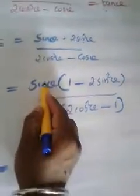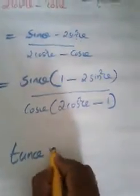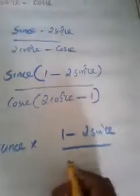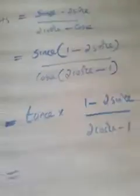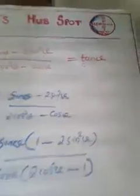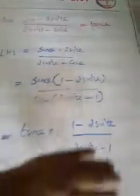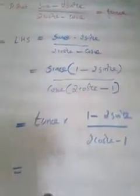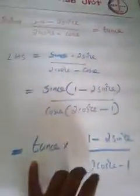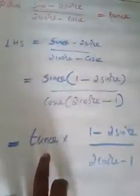So we get sin theta by cos theta, which is tan theta, multiplied by (1 minus 2 sin squared theta) divided by (2 cos squared theta minus 1). Since RHS is just tan theta, we need to prove that (1 minus 2 sin squared theta) divided by (2 cos squared theta minus 1) equals 1. To do that, replace cos squared theta in the denominator with 1 minus sin squared theta, using the identity sin squared theta plus cos squared theta equals 1.